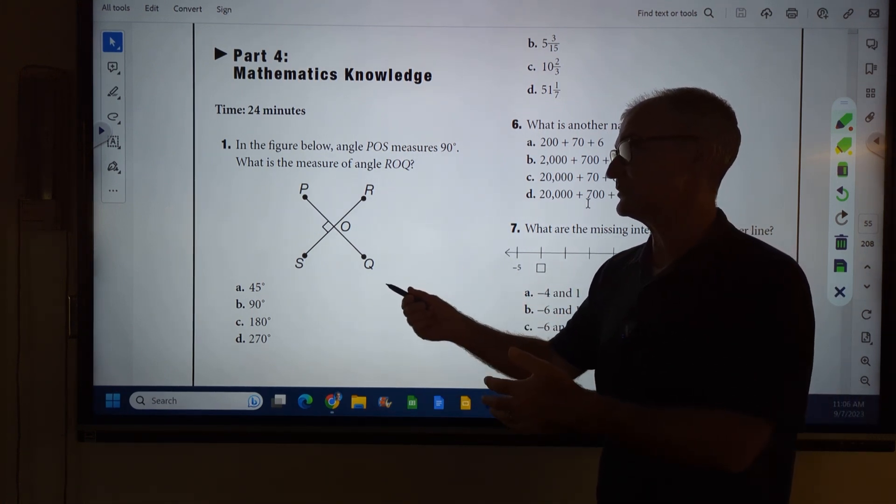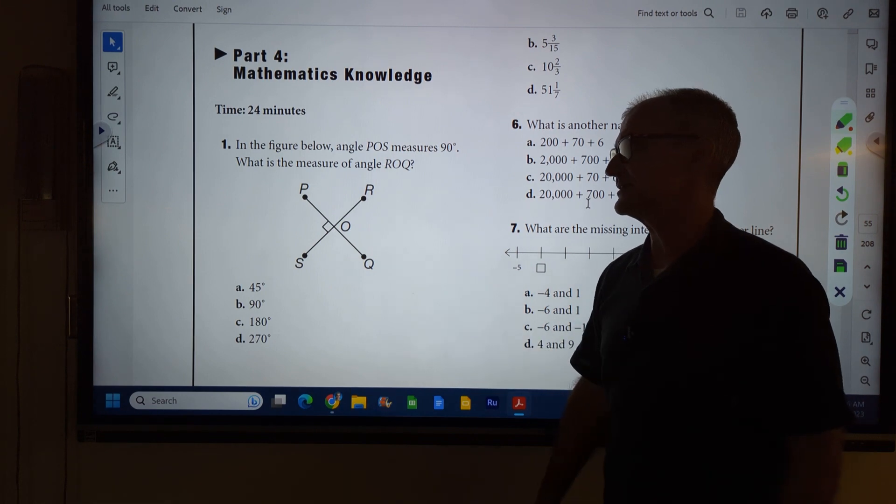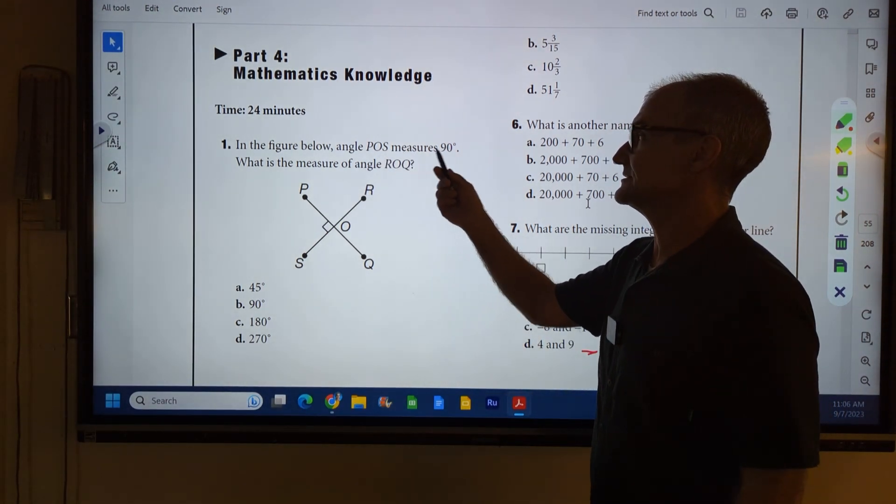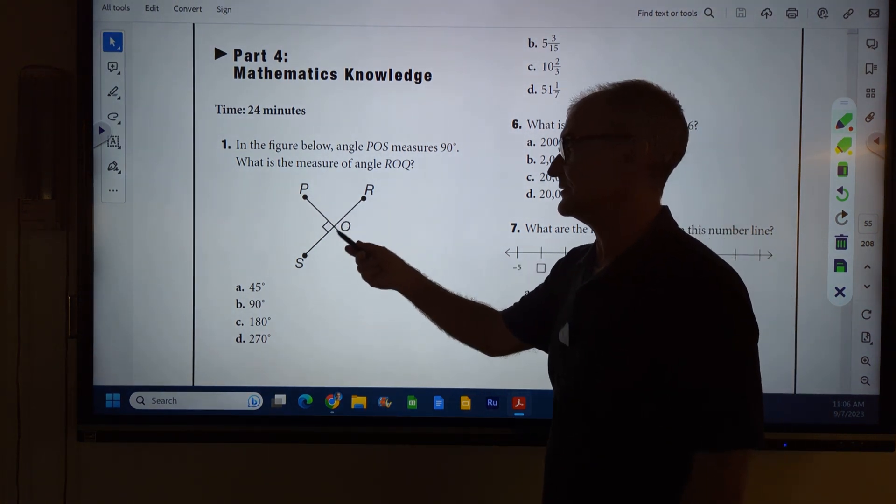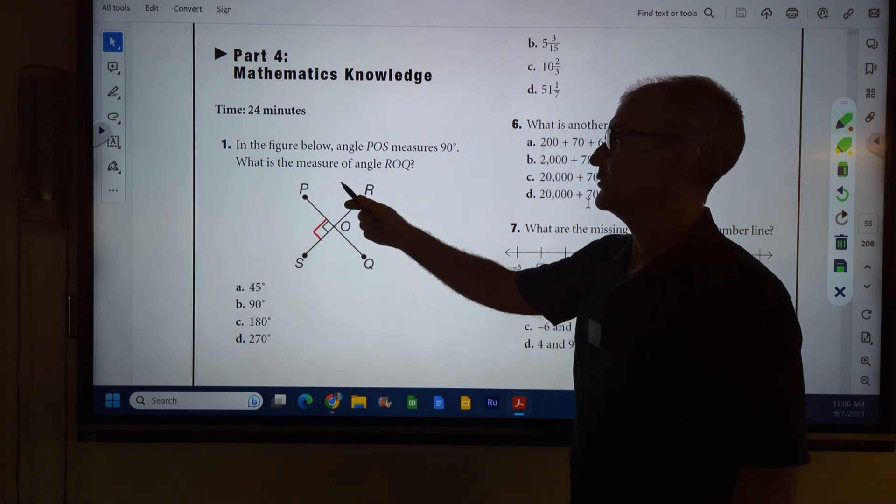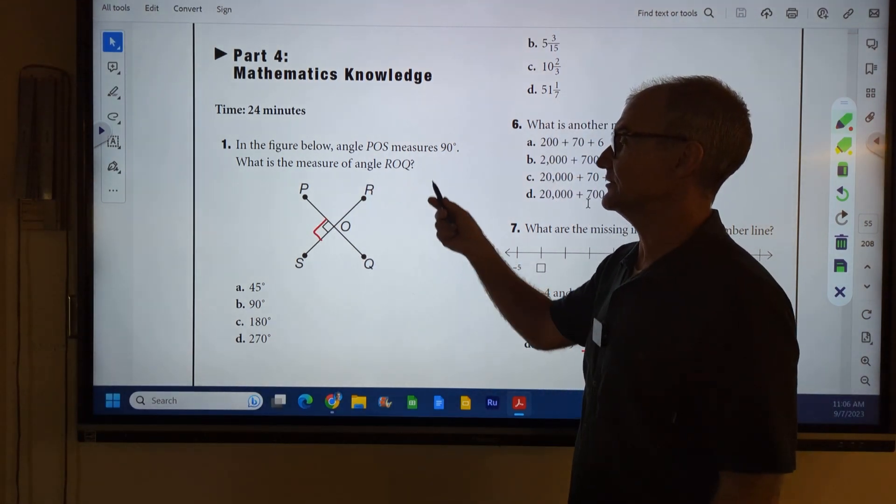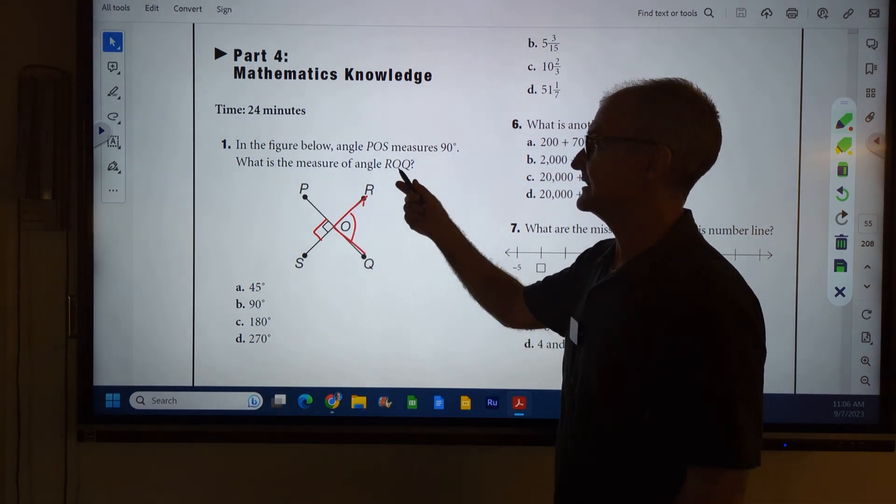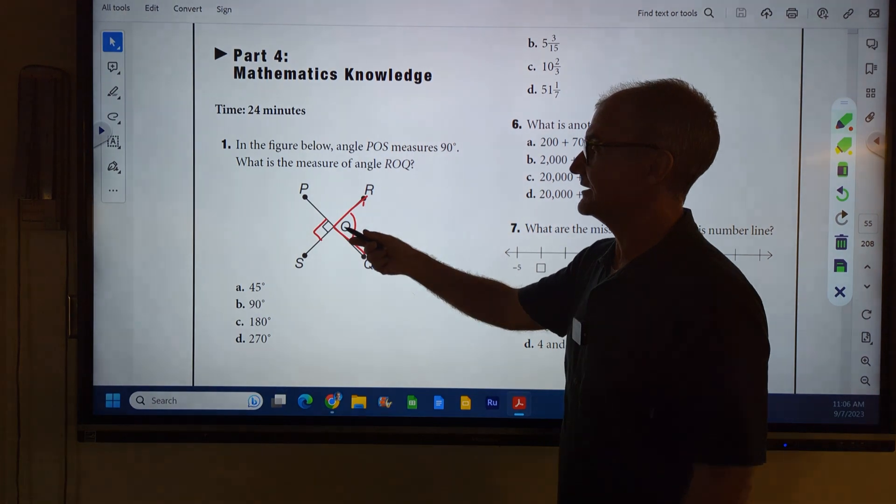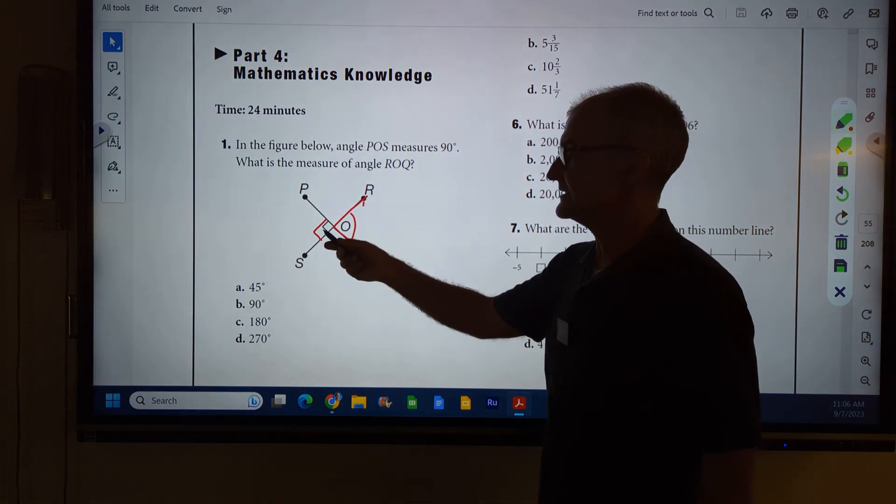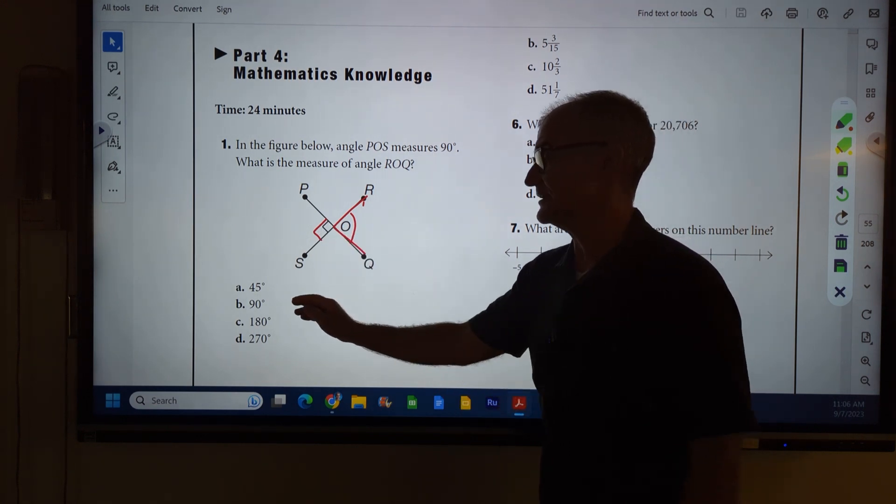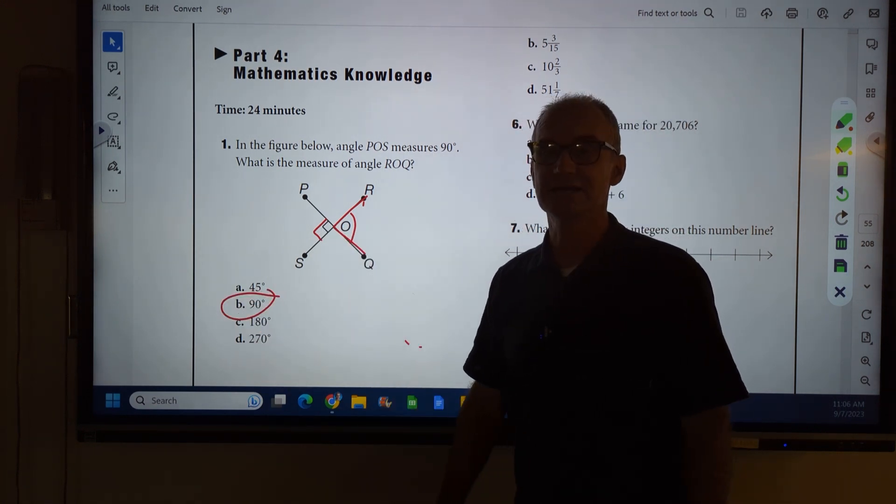Alright, again, go ahead and do this problem right here. Unpause the video and then watch how I do it. So number one, in the figure below, angle POS measures 90 degrees. So it's telling you POS is 90. It's even marked in the diagram. That little box means 90. What is the measure of angle ROQ? ROQ has to be this angle right here. That's always the middle letter for the angle. Well, if this is 90, the opposite angle has to be the same because of vertical angles. So correct answer, answer B, 90 degrees.